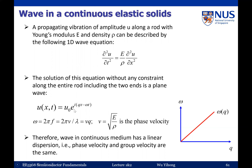Substituting the plane wave solution into the wave equation: differentiating twice with respect to t gives −ω², and twice with respect to x gives −q². The exponential and minus signs cancel, giving ω²/q² = E/ρ. Note that for lattice vibration, we use q instead of k for the wave vector — it is just a convention.